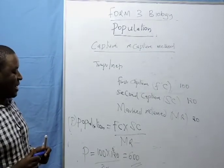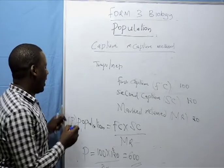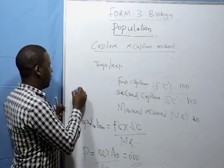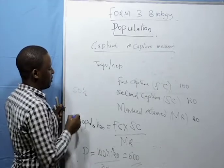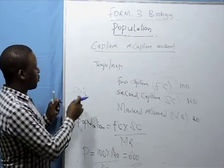If you do your calculations and get a figure like 50 and a half, we don't have half organism, we round off to 51.